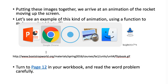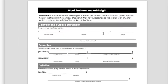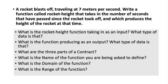Okay, so your page 12 looks like that, and we're going to work together through these different parts. Here's the problem: a rocket blasts off traveling at seven meters per second. Write a function called rocket-height that takes in the number of seconds that have passed since the rocket took off, and produces the height of the rocket at that time. Think about: what is the rocket-height function taking in as input? What type of data is that? What is the function producing as output? What type of data is that?